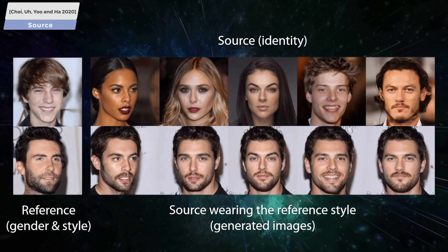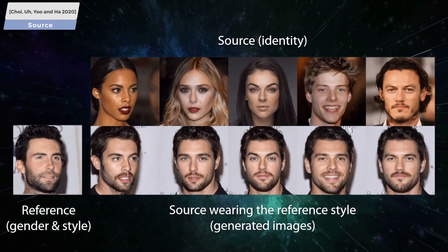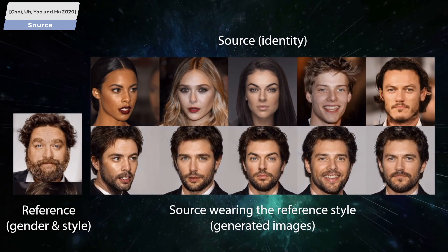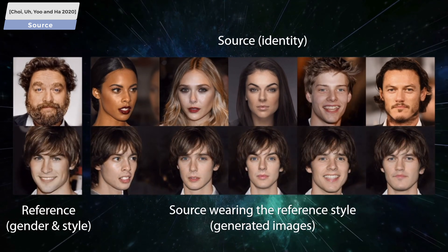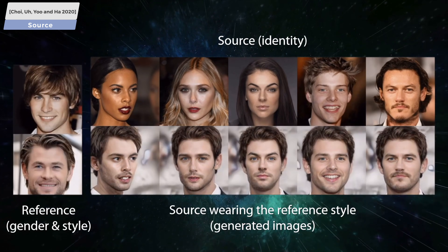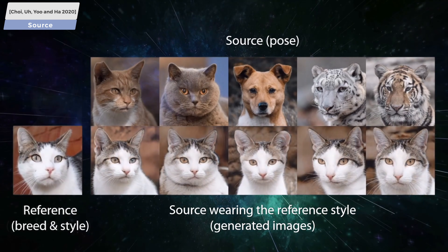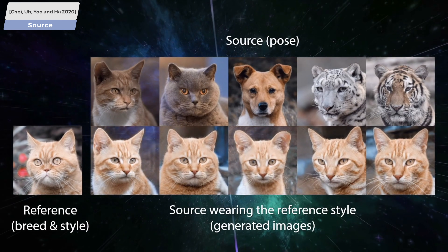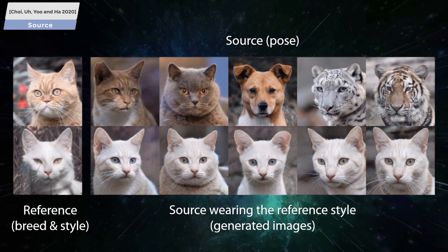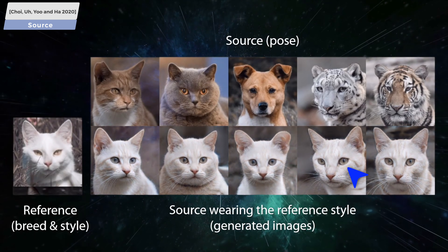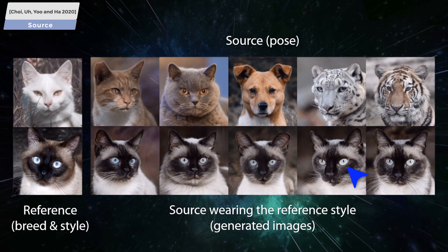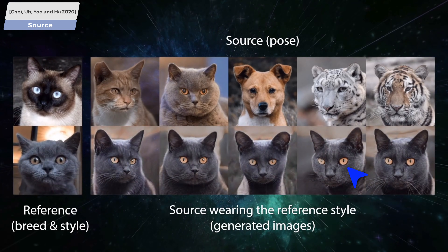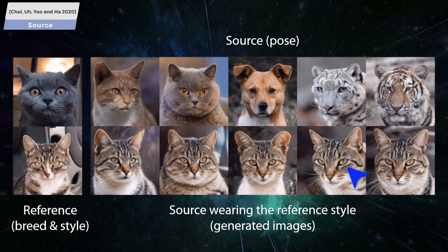But we are not nearly done yet. We noted that another great advantage of this technique is that it works for multiple domains, and this means, of course, none other than us looking at cats morphing into dogs and other animals. In these cases, I see that the algorithm picks up the gaze direction, so this generalizes to even animals.